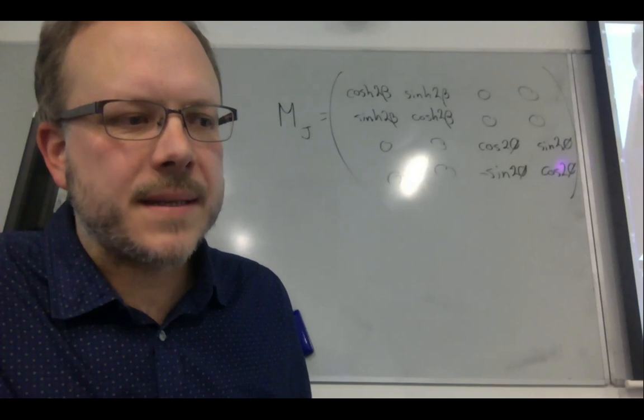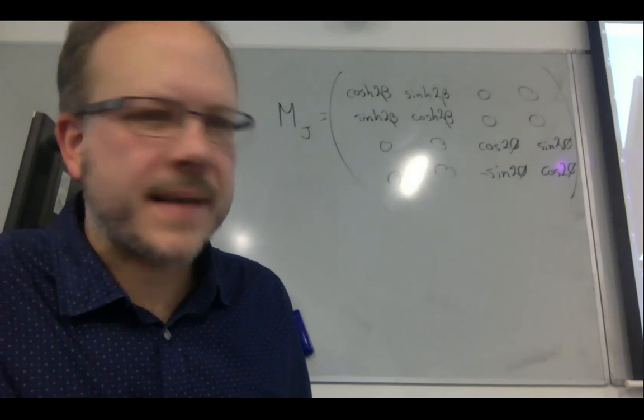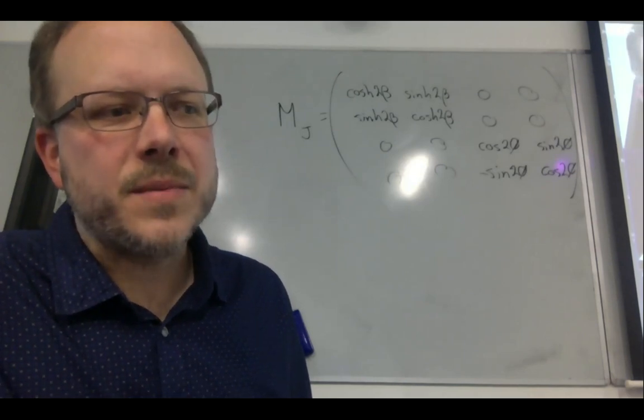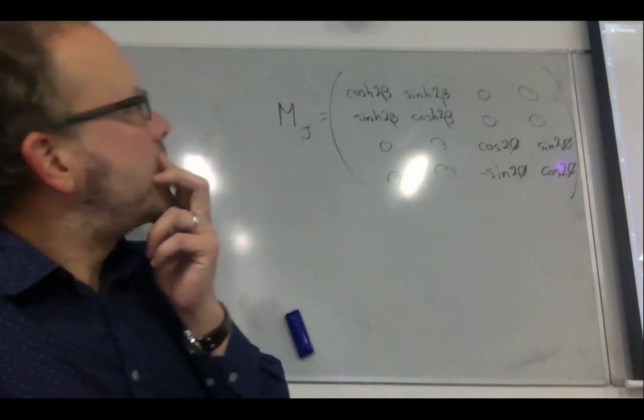Another way to think of it: Stokes U and V in the linear basis are formed by the cross-correlation between X and Y. So whatever gain terms you apply to scale X and Y, the upper-left quadrant of the Mueller matrix only mixes I and Q, while the lower-right quadrant with phi is mixing between Q, U, and V.